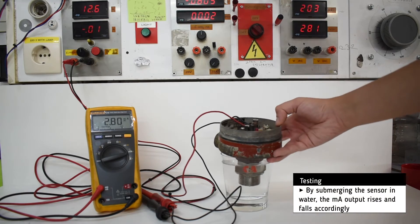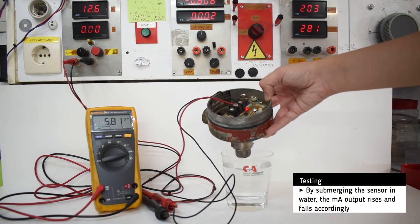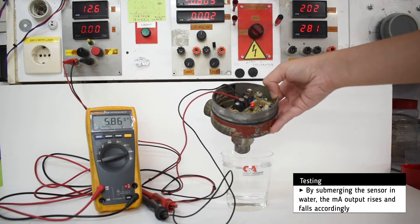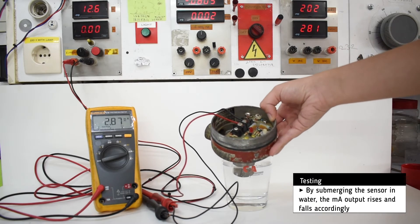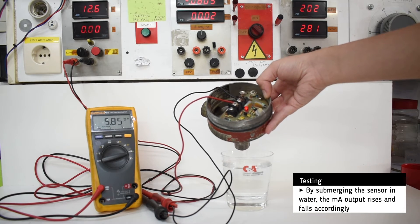By submerging the sensor in water, the milliamp output defaults to about 2.8 milliamps, and the LED indicator turns off.